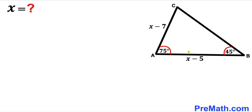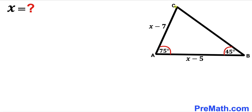Welcome to pre-math. In this video we have triangle ABC such that angle BAC is 75 degrees, angle ABC is 45 degrees, side length AB is x minus 5, and side length AC is x minus 7. Our task is to find the value of x.